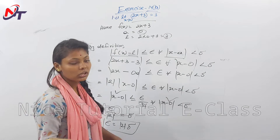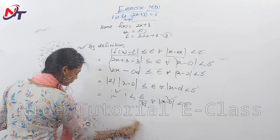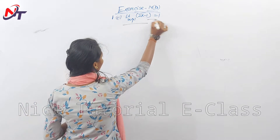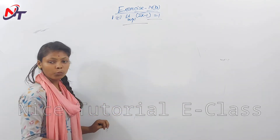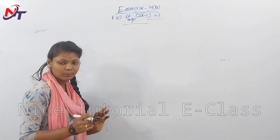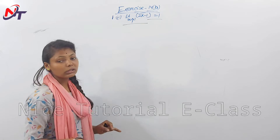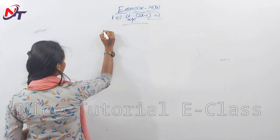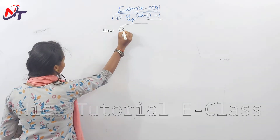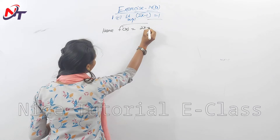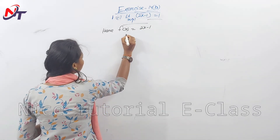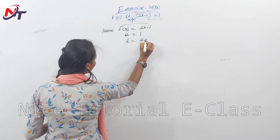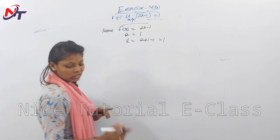That proves the epsilon-delta definition answer. Next, question number 2: the limit as x tends to 1. Using the same method and same definition, we prove it. Here f(x) = 2x - 1. The limit L = 2(1) - 1 = 1.